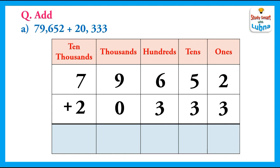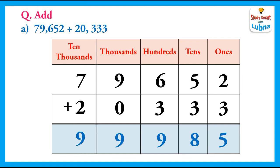First we will add the ones: 2 plus 3 equals 5, so we write 5 in the ones column. Now we add the tens: 5 plus 3 equals 8. We add the hundreds: 6 plus 3 equals 9. Now we add the thousands: 9 plus 0 equals 9. Finally we add the ten-thousands: 7 plus 2 equals 9. So the answer is 99,985.